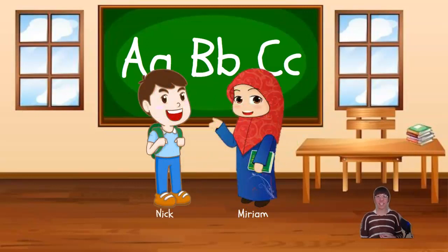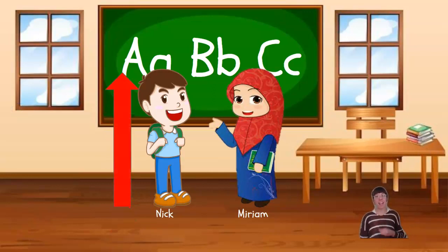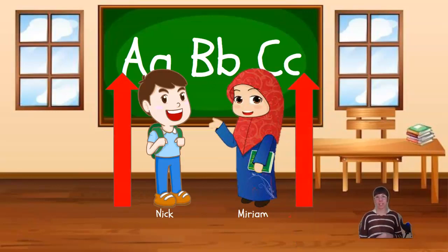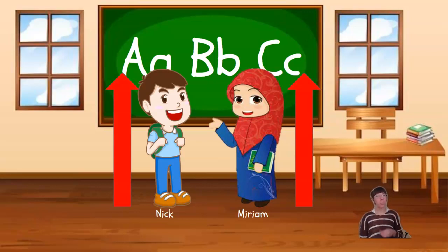Finally, let's look at Nick and Miriam. When we measure Nick, we start at the bottom of his feet and measure to the top of his head. We can see that distance by the red arrow. Now let's measure Miriam. We're starting at the bottom of her feet and measuring to the top of her head. This is represented by another red arrow. What do you notice about these two distances?